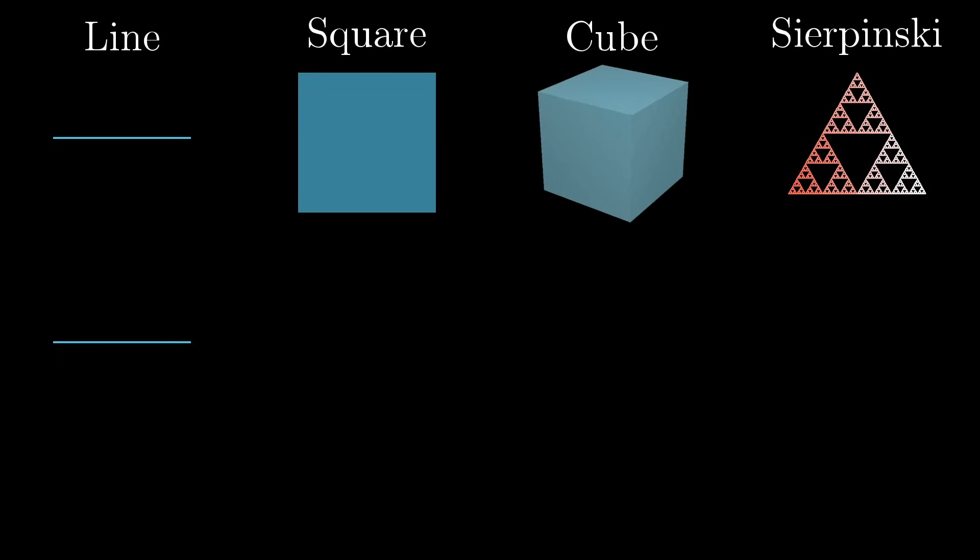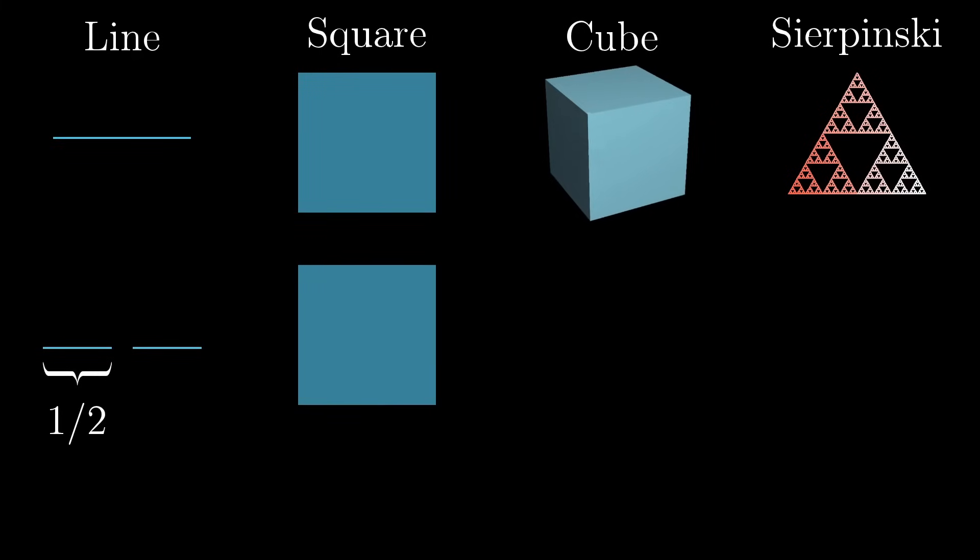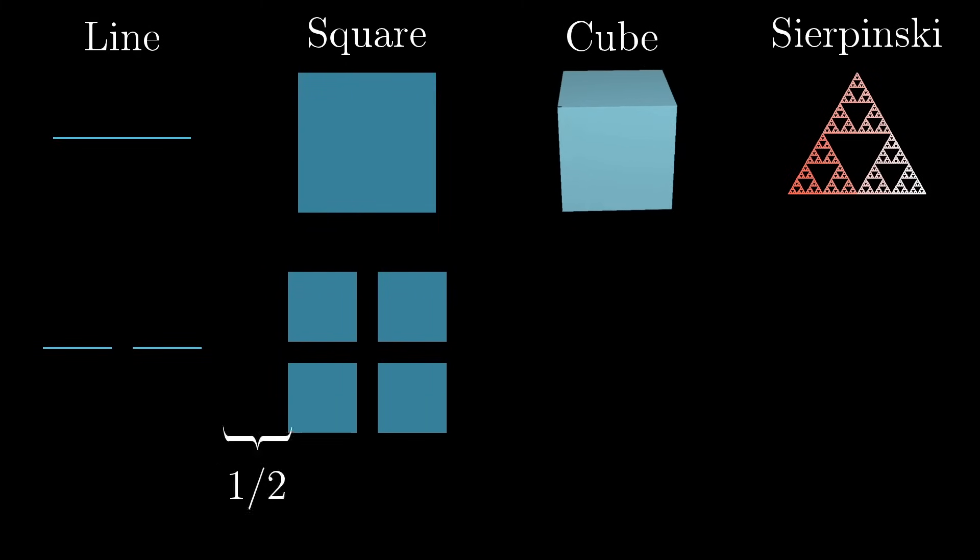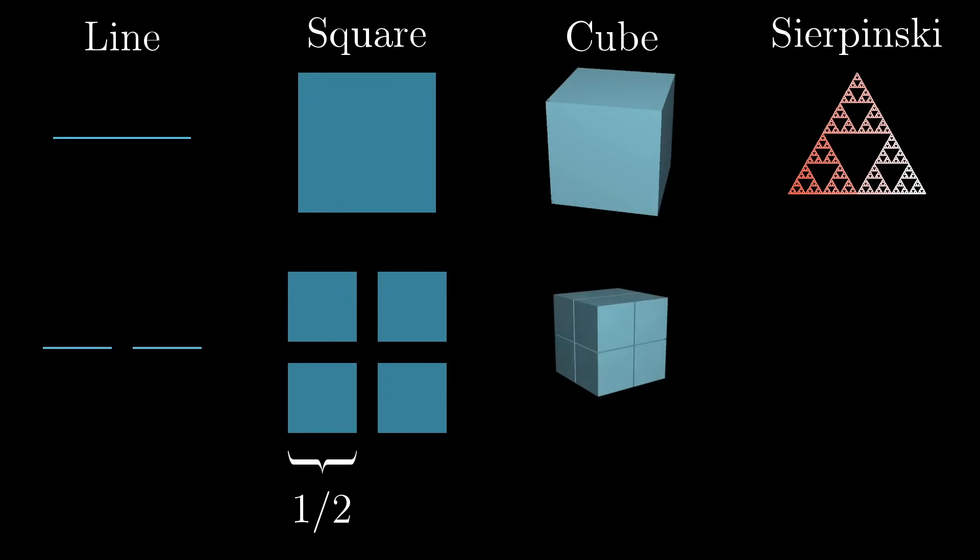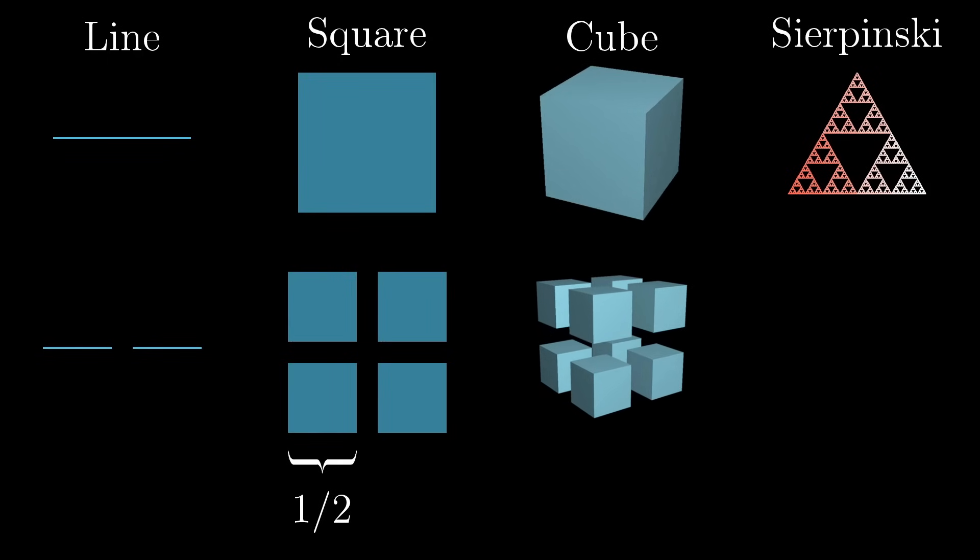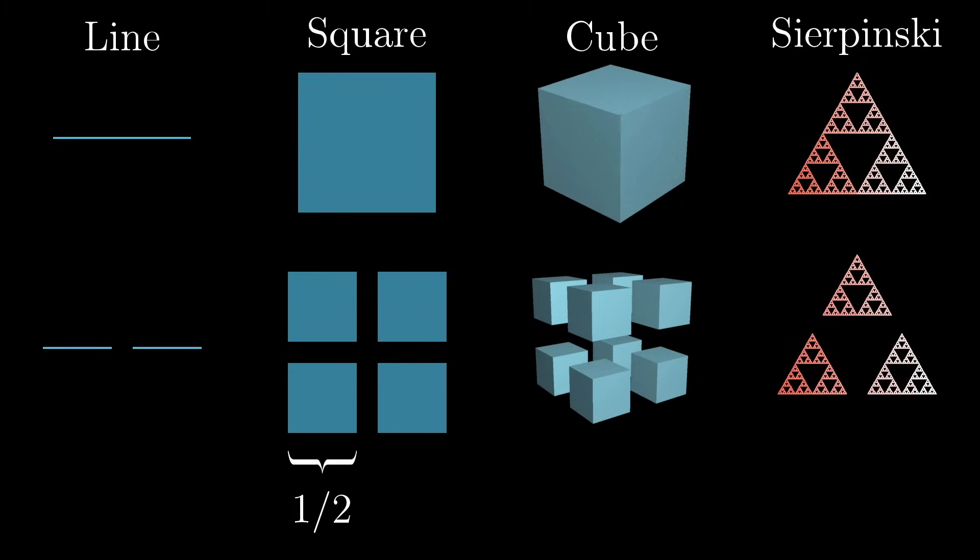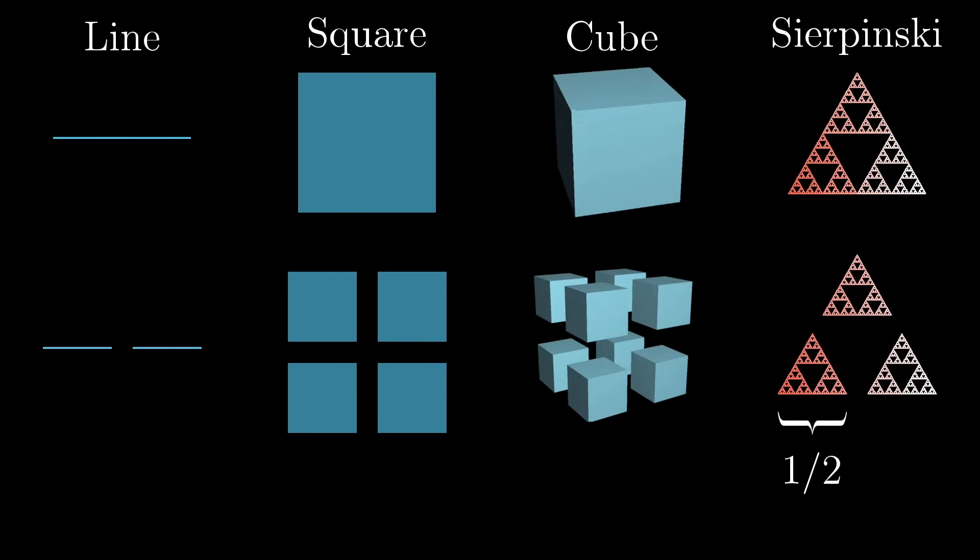A line can be broken up into two smaller lines, each of which is a perfect copy of the original, just scaled down by a half. A square can be broken down into four smaller squares, each of which is a perfect copy of the original, just scaled down by a half. Likewise, a cube can be broken down into eight smaller cubes. Again, each one is a scaled down version by one half. And the core characteristic of the Sierpinski triangle is that it's made of three smaller copies of itself, and the length of the side of one of those smaller copies is one half the side length of the original triangle.